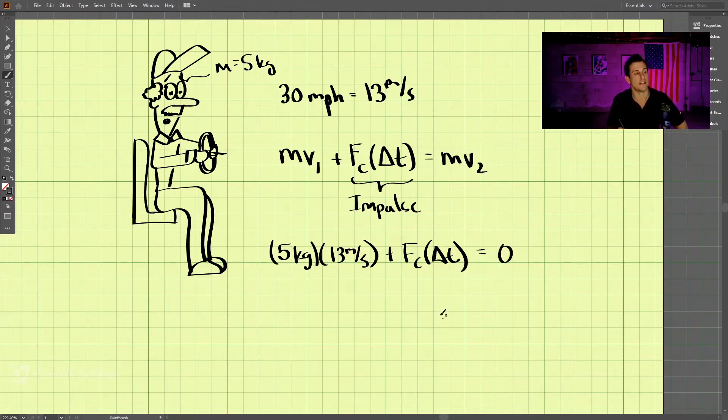So we need to know what the amount of time it takes to come to rest. And let's just assume that this is 5 milliseconds or 0.005 seconds. And that's just an approximation. Hitting the steering wheel, your head's going to stop pretty quickly. So let's just assume it's 5 milliseconds.